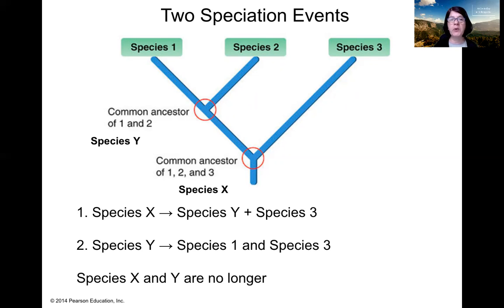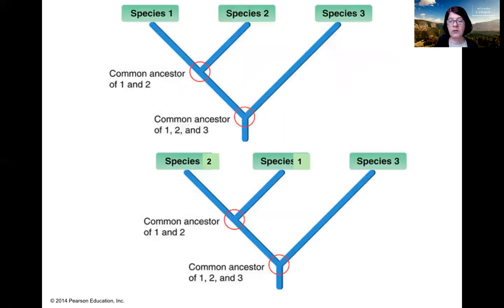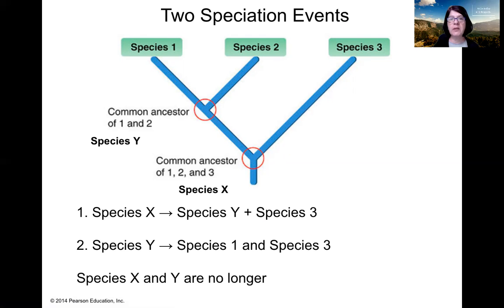Species Y is the next branch point, which tells us a second speciation event has happened. In that speciation event, species Y has split into species one and species two. It's also important to understand that species X and Y are no longer. That tree illustrates the evolutionary relationship — the evolutionary relatedness — between these three species.